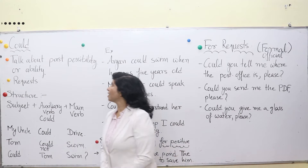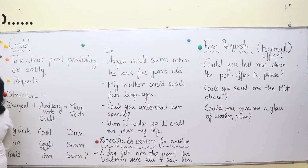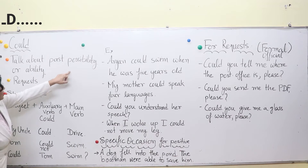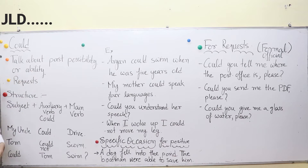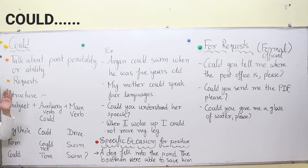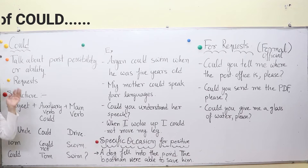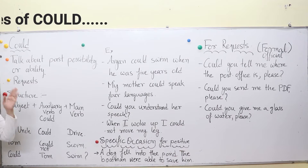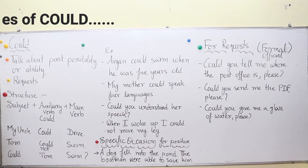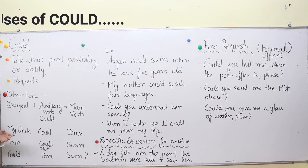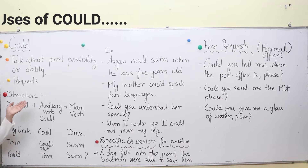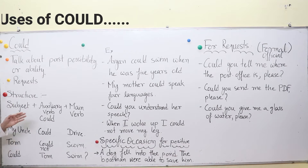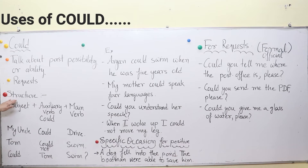Let's start with the use of could when we talk about past possibility or ability. If we say that Tom could swim, we are saying that in the past — before 2 months, 1 year, 3 years — he could swim. Or if we say that my mother could speak 5 languages, we are saying she could speak those languages in the past. So here we can see the structure of could.